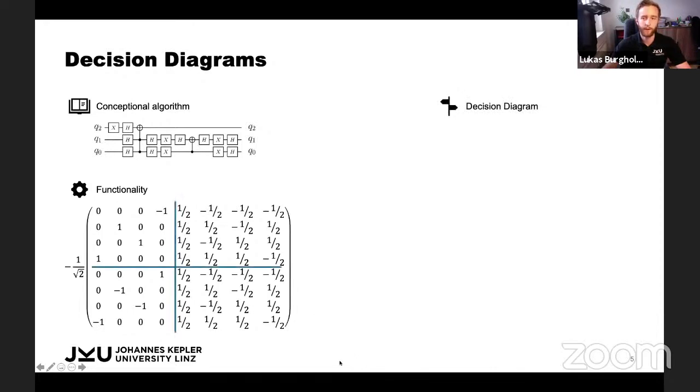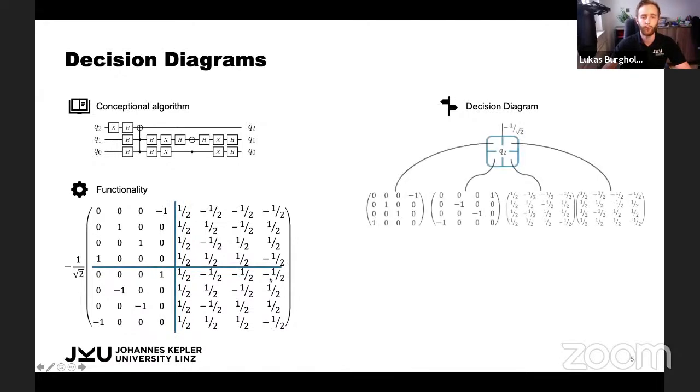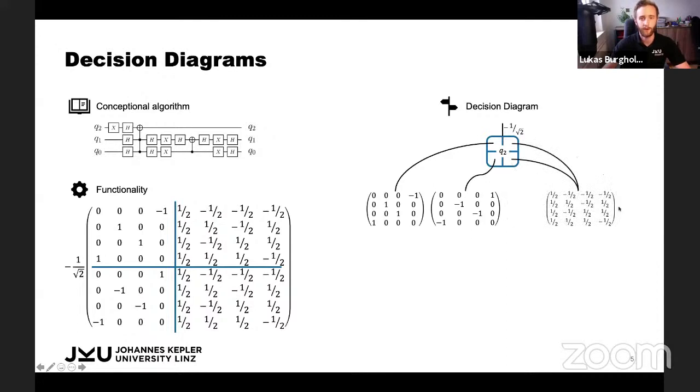First, we split the matrix into equal sub parts and create a node with four successors, each representing one of the sub parts. Then we have a careful look at those sub parts because essentially these two sub matrices are identical. So we don't need two successor nodes for them. We can just use one node. Additionally, there's a constant factor of one half, which we can pull out as an edge weight right here to simplify the sub matrix.